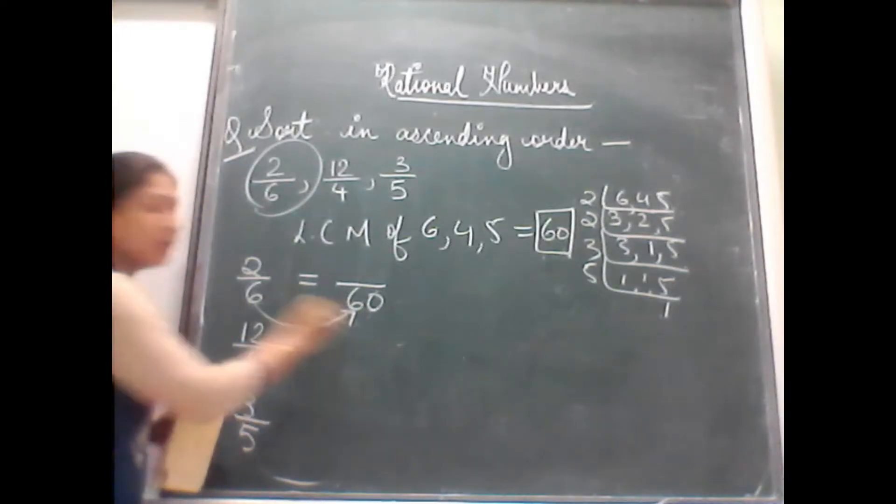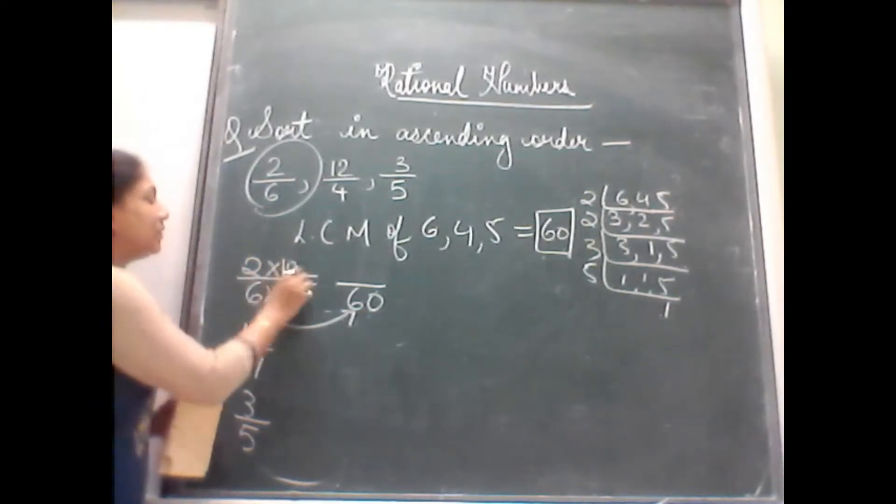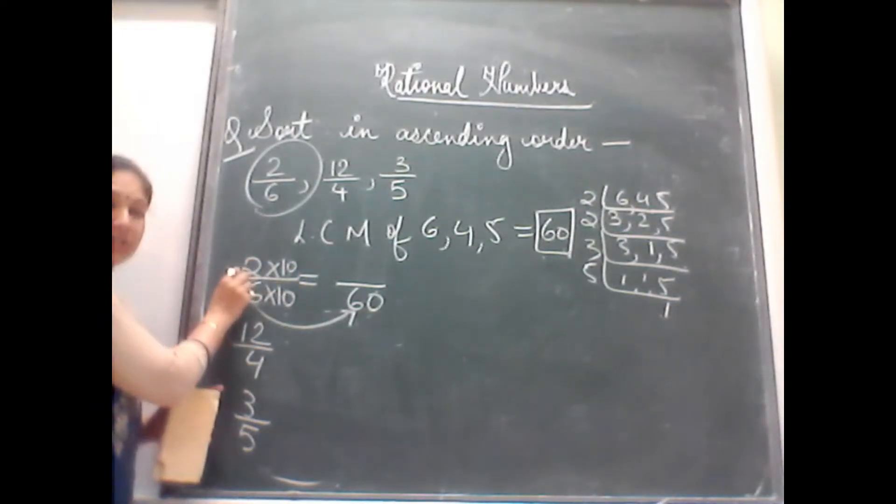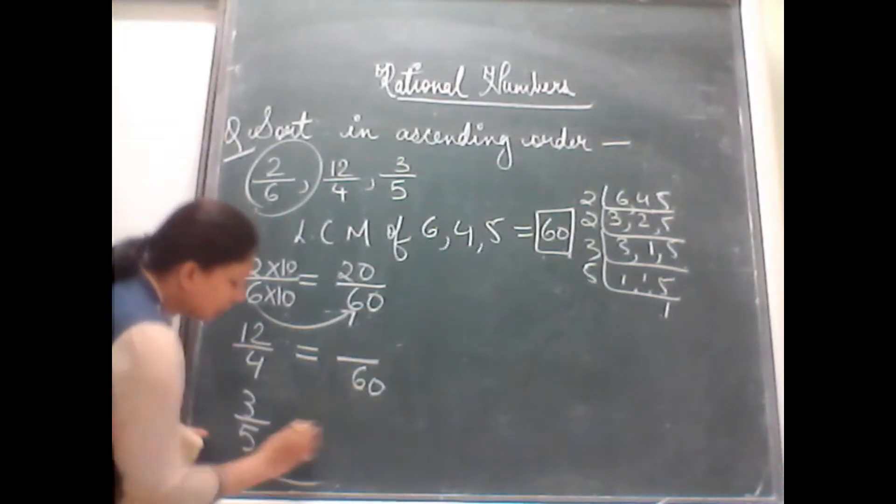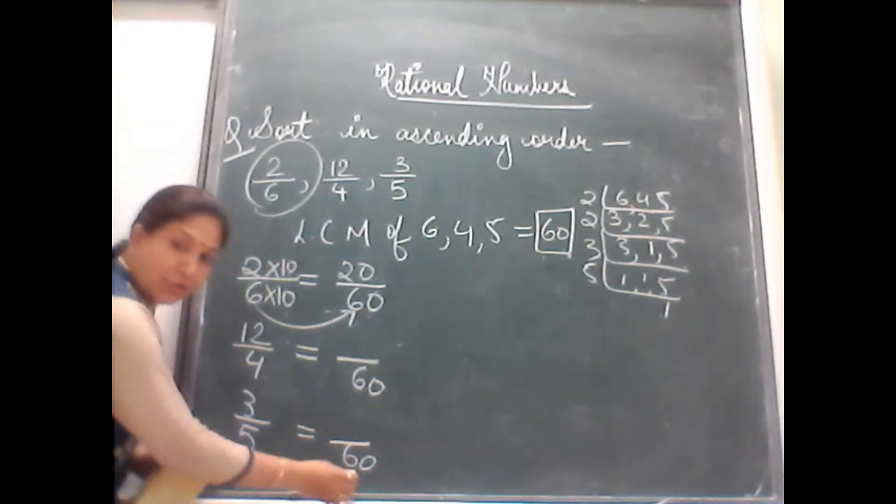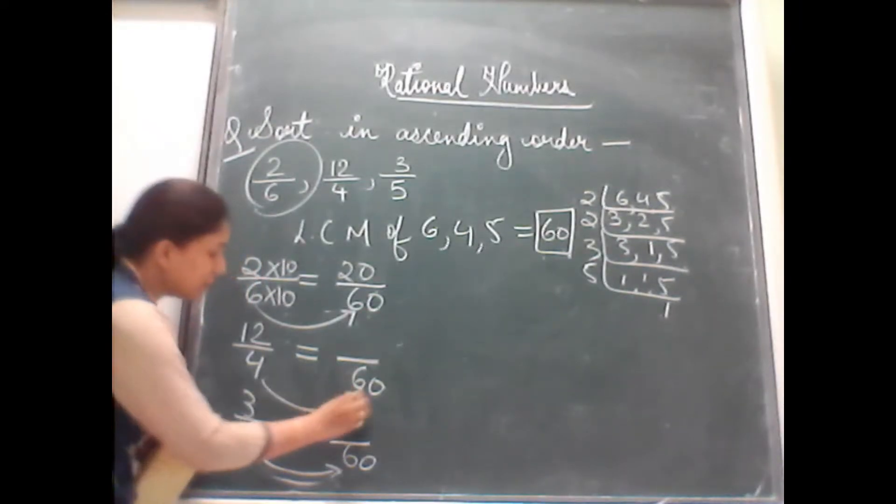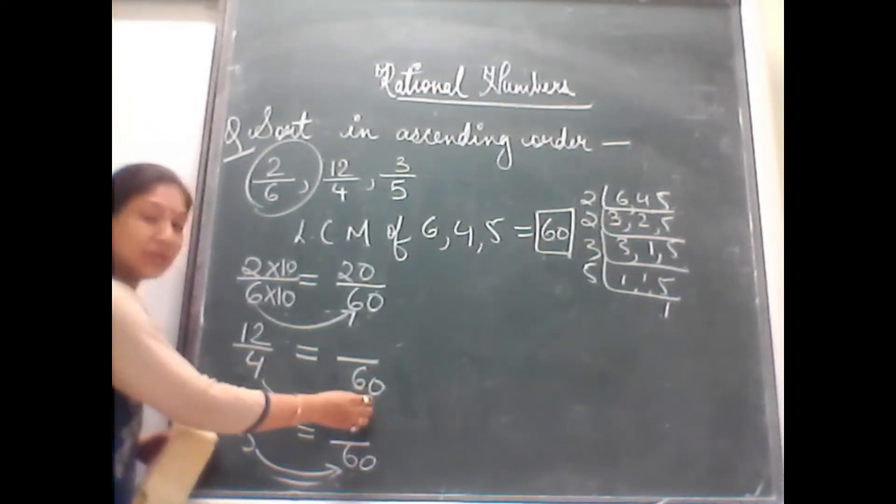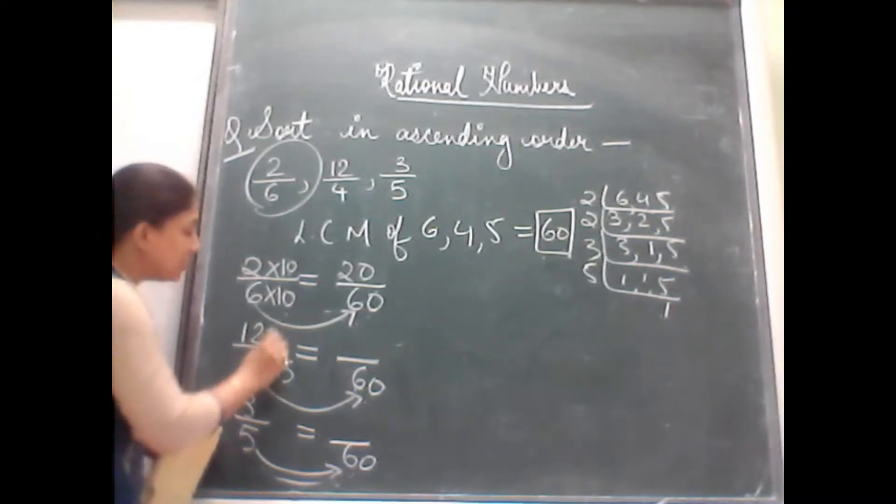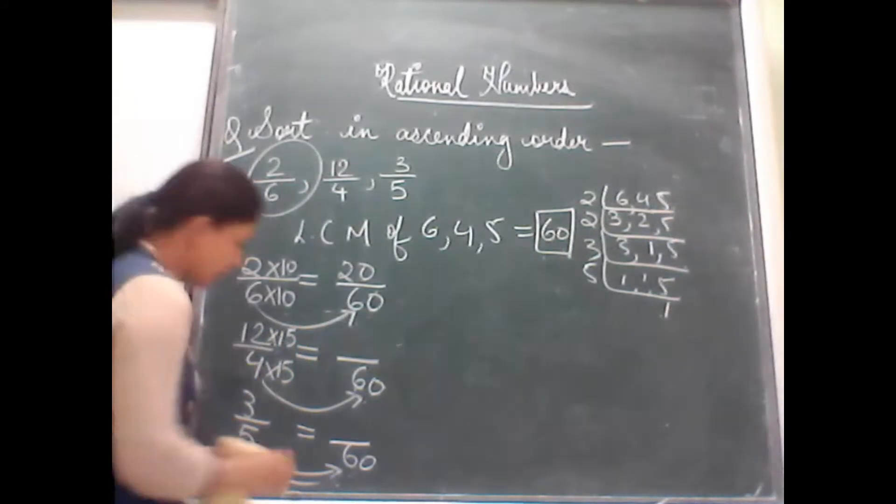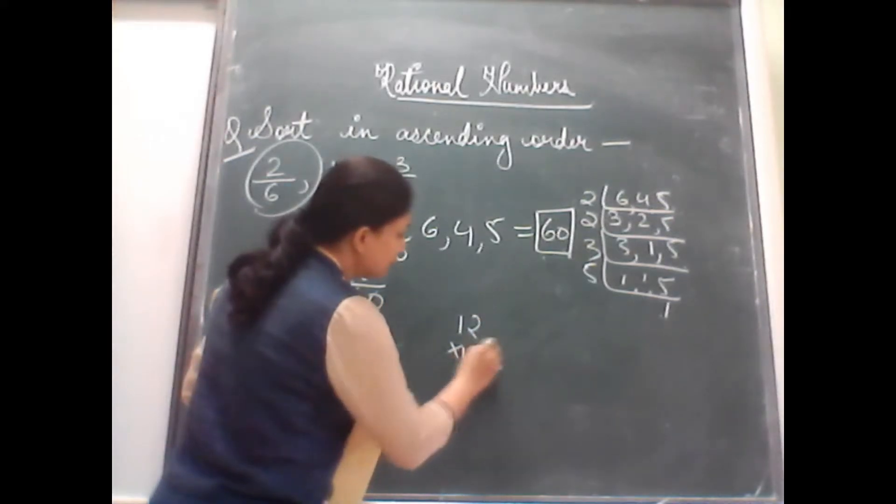In 6 table, when do you get 60? You get it in 10 times. So multiply with 10 at numerator also with this number that is 2, 2 tens are 20. The same thing you will do for the other numbers also. So the LCM what you have got, you will compare that number, the given number with the calculated LCM.